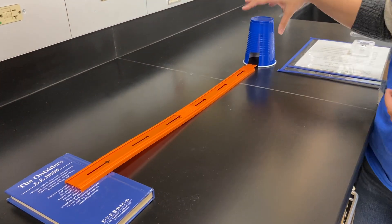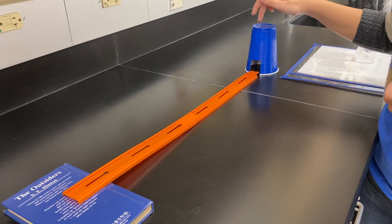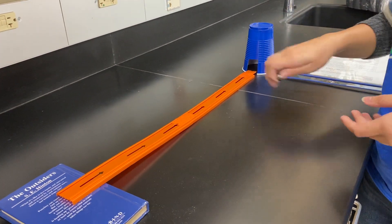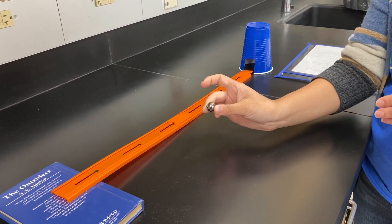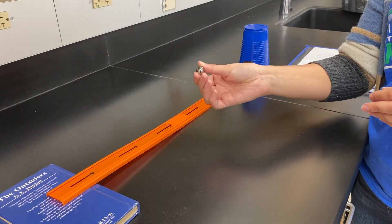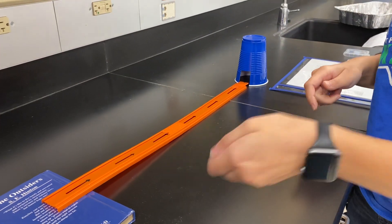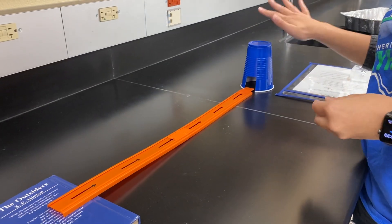I have a ramp here, and it's on a book, so it's got a slight angle. I have an empty cup right here, and that's going to push the cup. So I have a little ball. This is called a ball bearing. So this I'm going to let go, and we're going to see how far it pushes the cup.